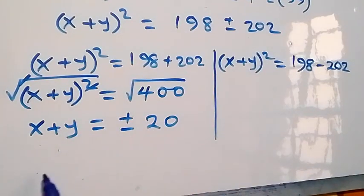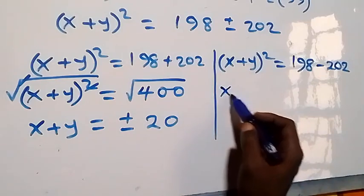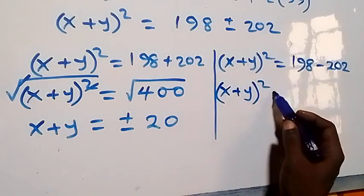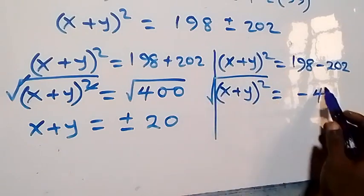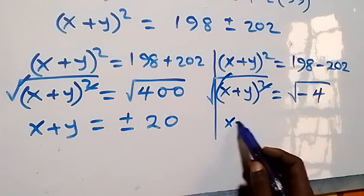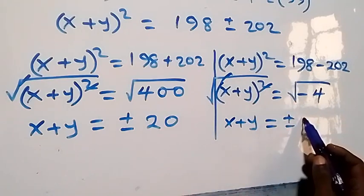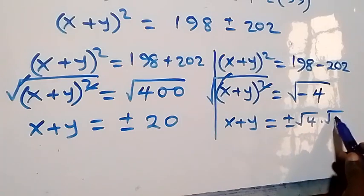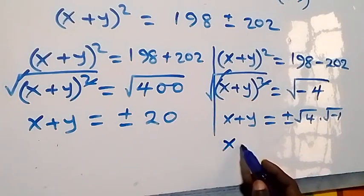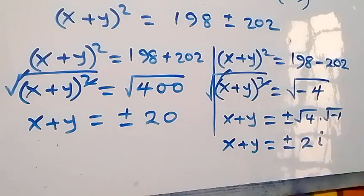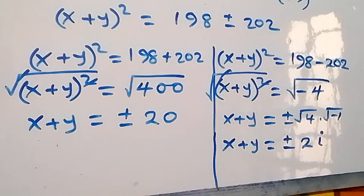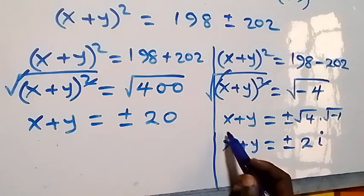So we have x plus y equals 20 and x plus y equals minus 20. Also on the second case, (x plus y) squared gives us minus 4. When we take the square root on both sides, x plus y equals plus or minus root 4 times root minus 1, which implies x plus y equals plus or minus 2i. So we have the first solution x plus y equals 2i and the second x plus y equals minus 2i. These are two complex solutions, and the two real solutions are plus or minus 20.